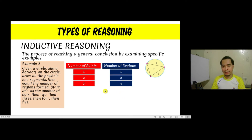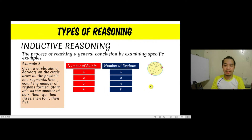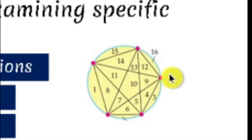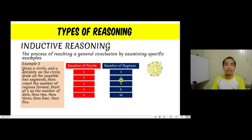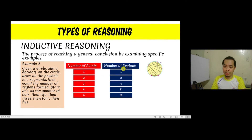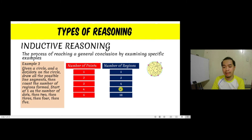Let us continue observing specific examples. Adding a fourth point, the number of regions created is eight, as illustrated. With five points, as shown in this figure, there are 16 regions created. We can now observe the relationship: from one it became two, from two it became four, from four it became eight, and from eight it became 16.